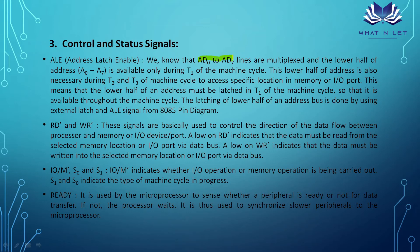The control signals are RD bar and WR bar. These signals control the direction of data flow between the processor and memory or I/O ports. If the processor needs to read from memory or an I/O port, RD bar is made low. A low on WR bar indicates that data must be written from the processor into the selected memory location or I/O port via the data bus.